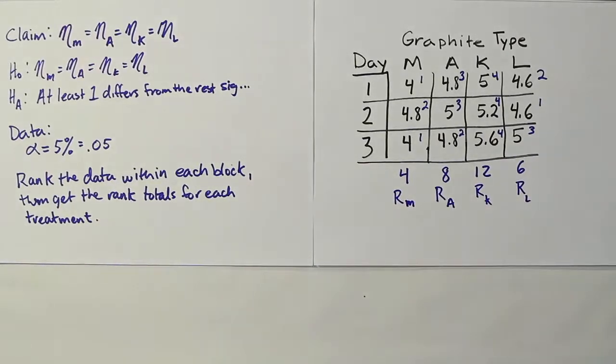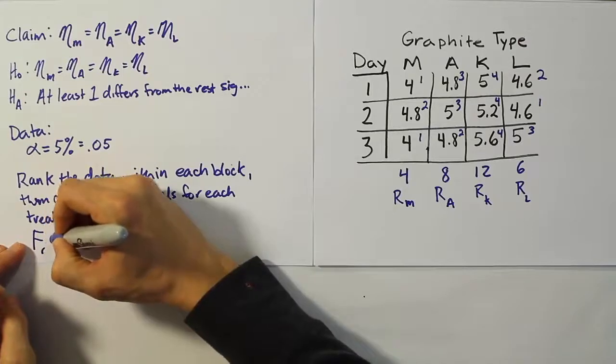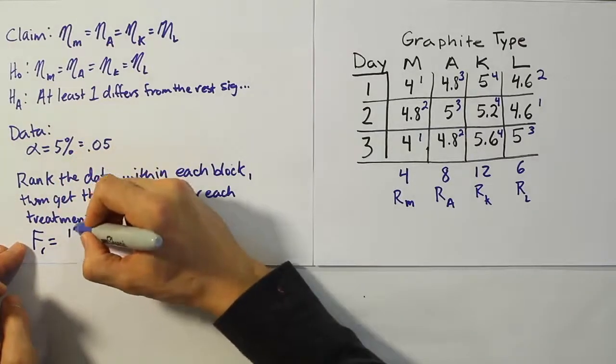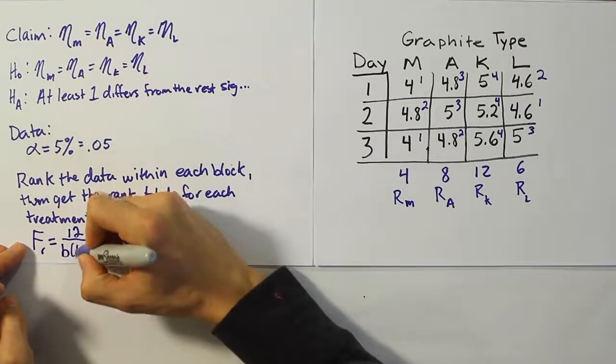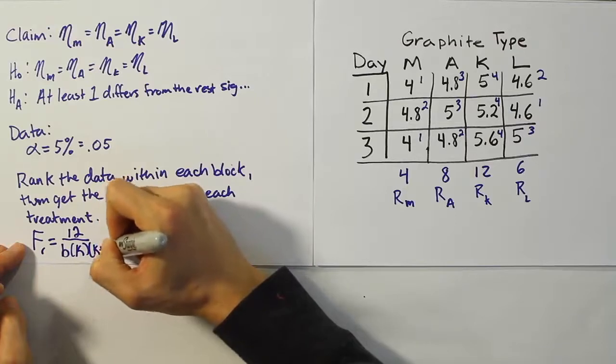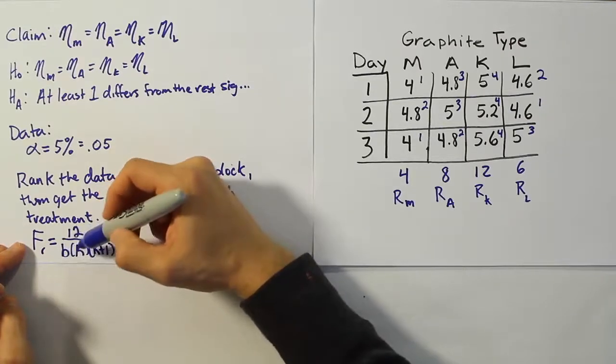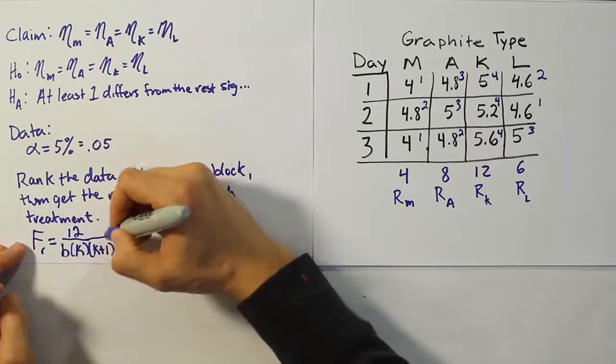All right, so now from here, what we want to do is take those values and plug them into our test statistic formula. So our test stat formula is actually quite involved. The formula itself is denoted by FR, FR for Friedman, of course. And the formula is like this. It's 12 over, it'll be B times K times K plus one. B is the number of blocks we had in the problem, K is the number of treatments, and of course K plus one is just one more than the number of treatments.